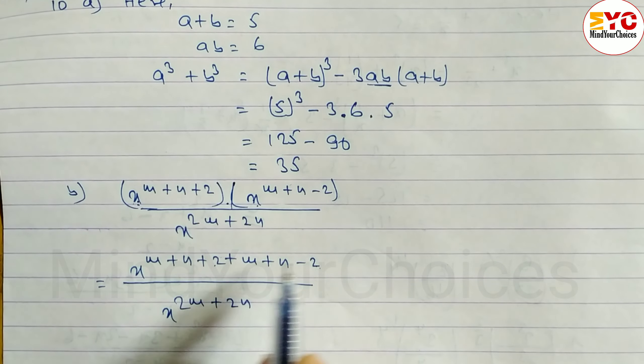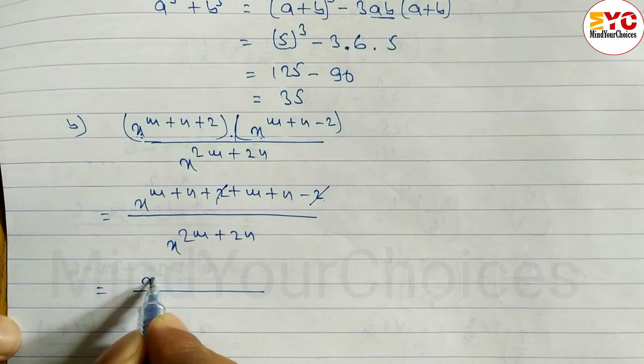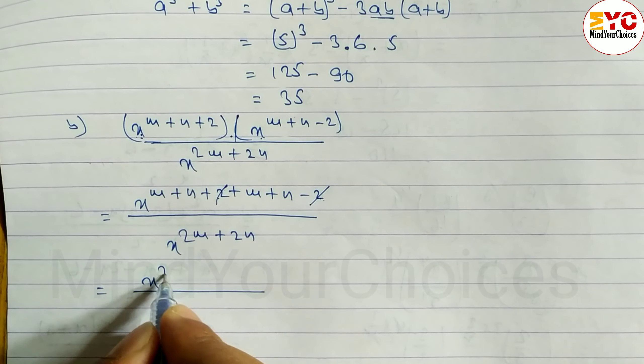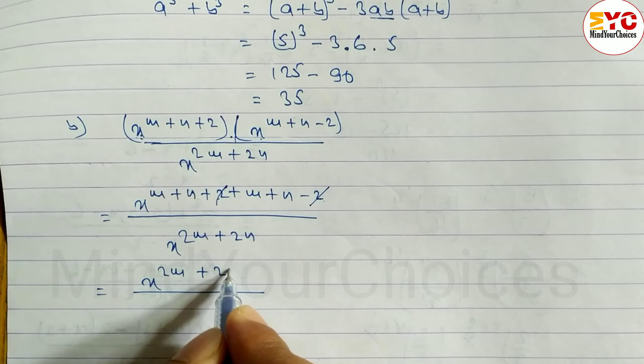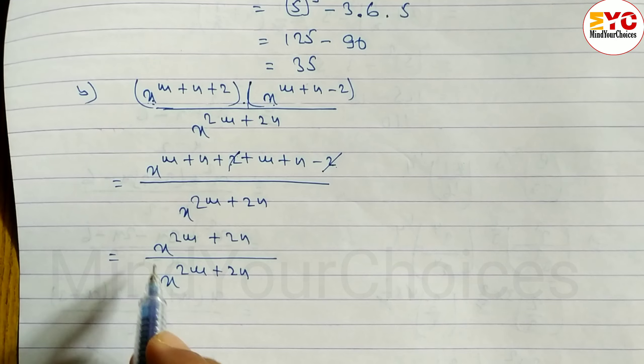Now we look at here, this 2 is positive and this 2 is negative, so they cancel. X power like terms we add: m plus m is 2m, plus n plus n is 2n, divided by x power 2m plus 2n.